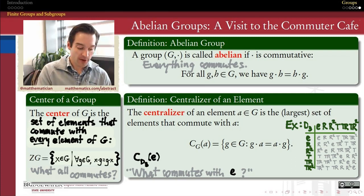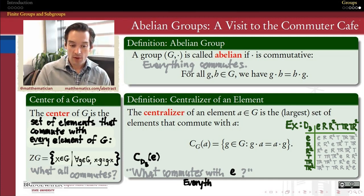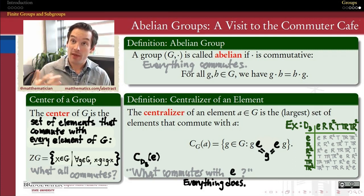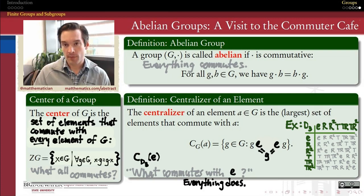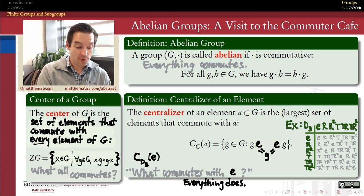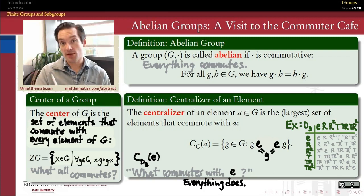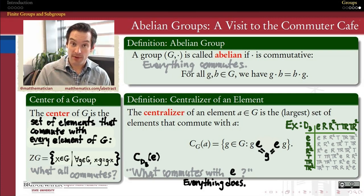For starters, suppose I single out the identity element. What commutes with the identity element in D3? We remember from the identity property that for any G, EG is going to equal GE, because those are each equal to G itself. Every identity element is a two-sided identity. Therefore, the centralizer of the identity element consists of the entire group — and that's true not just in this example, but in any group whatsoever: finite, infinite, abelian, or not. The identity element always commutes with everything.